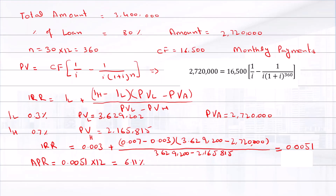The effective annual rate (EAR) is equal to (1.0051) raised to the power 12, minus 1, which gives 6.28 percent. So the effective annual rate is 6.28 percent, whereas the APR is 6.11 percent.